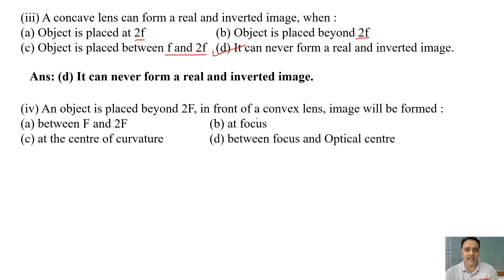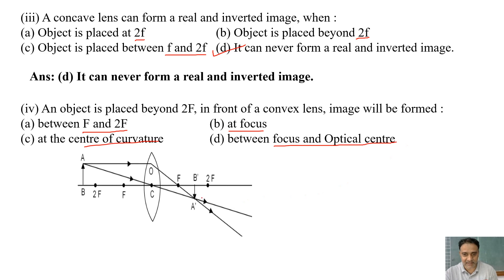And the next question. An object is placed beyond 2f in front of a convex lens. Image will be formed: between f and 2f, at focus, at the center of curvature, between focus and optical center. Agar hum log 2f ke beyond mein rakhte hai, to hum log ko image kuch aisa milta hai, right? Real or inverted milta hai, aur f or 2f ke beech milega. So the correct option is a, right?